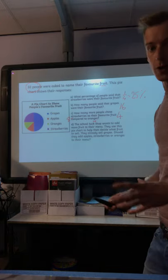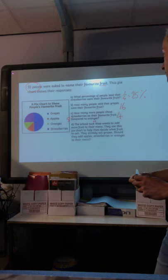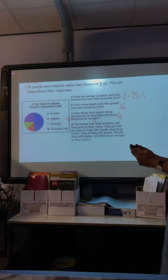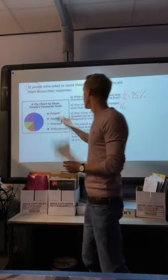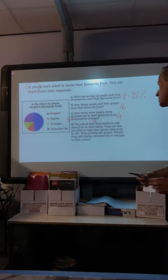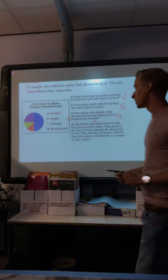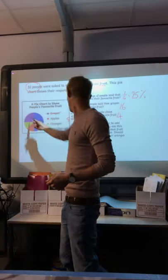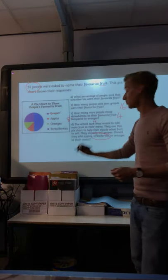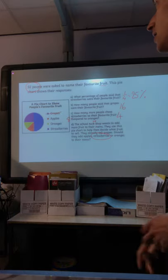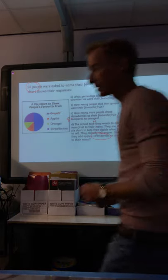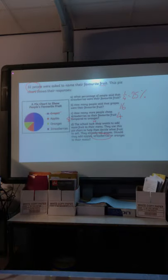School's Tuck Shop wants to add some fruit to their menu and use the pie chart to help them decide. They already sell grapes. Should they add apples, strawberries or oranges? Well, they should choose the most popular, which was strawberries. That would be the most sensible. More people are more likely to buy that as their favorite than apples or oranges. So strawberries would be the sensible suggestion if you were making that pitch.